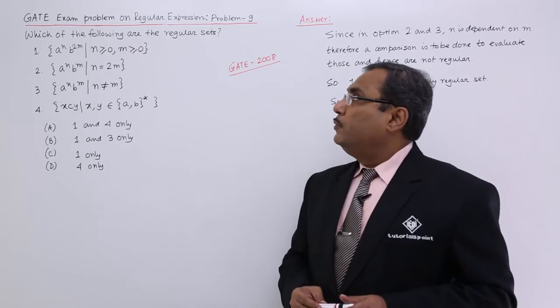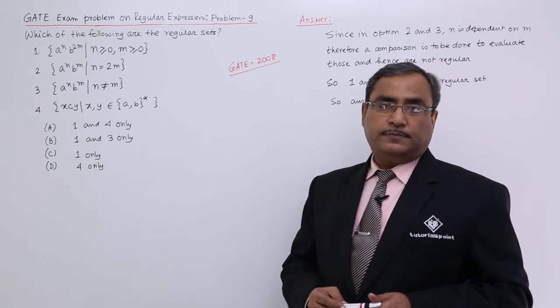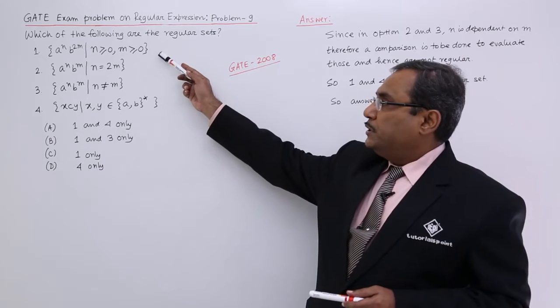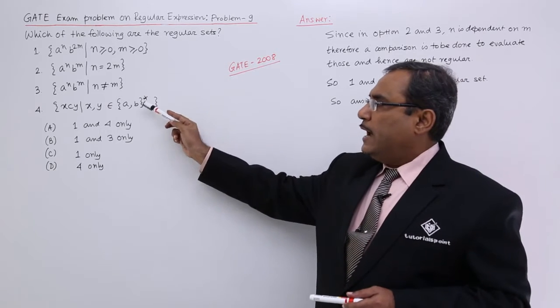Which of the following are the regular sets? We are having option 1, 2, 3 and 4.